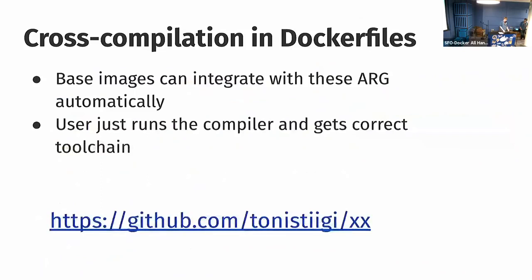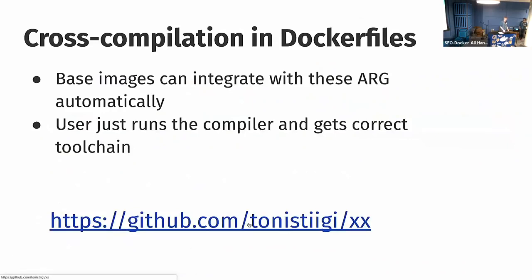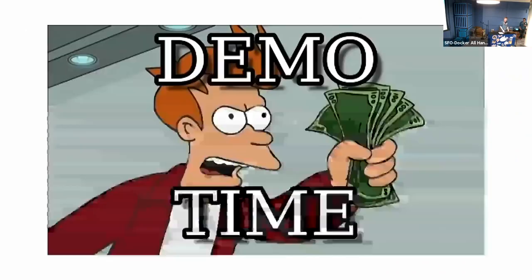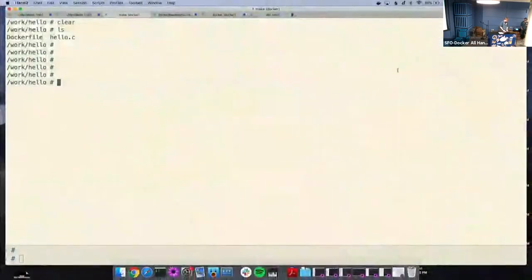The repository has base images for different languages for cross-compilation — images for Go, C, and now WASM as well. Let's take a look at this in action.